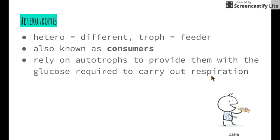Heterotrophs rely on autotrophs to provide the glucose required to carry out respiration. We breathe in oxygen, but the only place we can get glucose from is by eating other organisms — in particular, eating lots of fruit and vegetables. Plant material provides us with the glucose we need to carry out respiration in order to produce ATP.